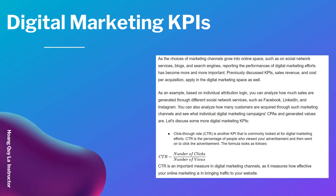Let's discuss some more digital marketing KPIs. We have click-through rate, which is CTR — another KPI that is commonly looked at for digital marketing efforts. CTR is the percentage of people who view your advertisement and then go on to click it. The formula is: CTR = number of clicks divided by number of views. CTR is an important measure in digital marketing channels as it measures how effective your online marketing is in bringing traffic to your website.